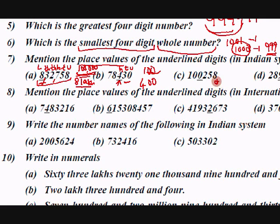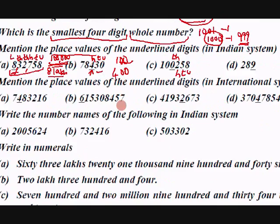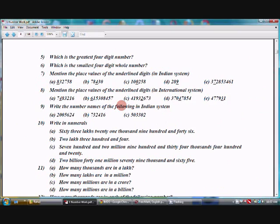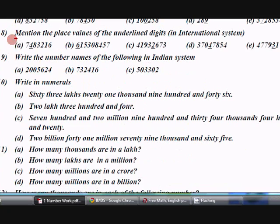Write units, tens, hundreds — the next position would be thousands. Likewise, we have to find the other numbers. For question 8, mention the place values of the underlined digits in the international system. Try this in the same way.